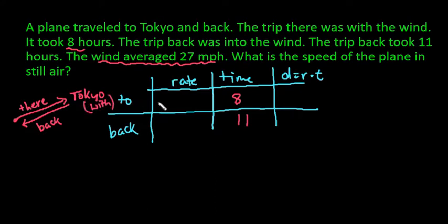Going with the wind, that means that you're going to have the rate of the plane plus the wind speed, which is going to be 27 miles per hour. And then against the wind, that means that you have the rate of the plane and you're going to subtract the wind because it's going to be pushing against the plane.